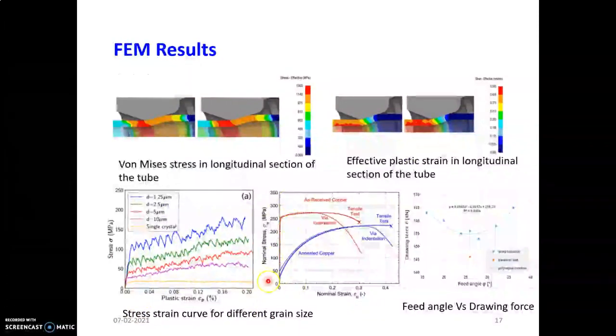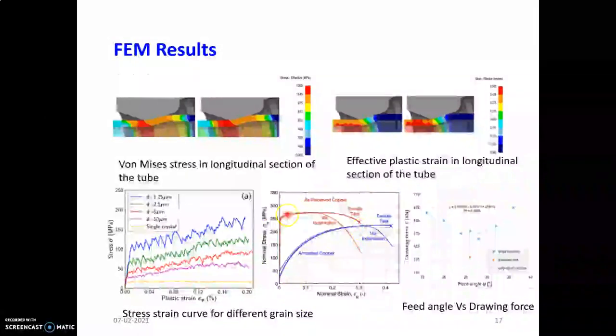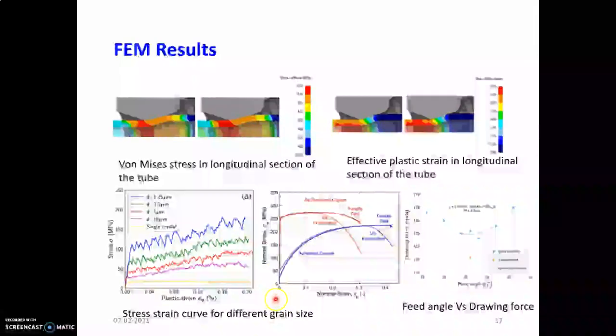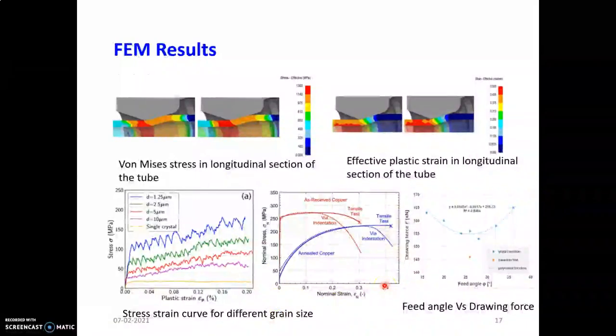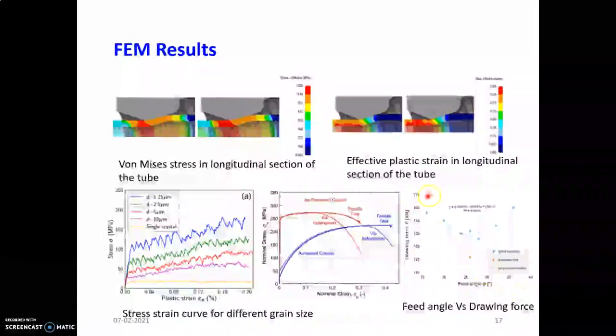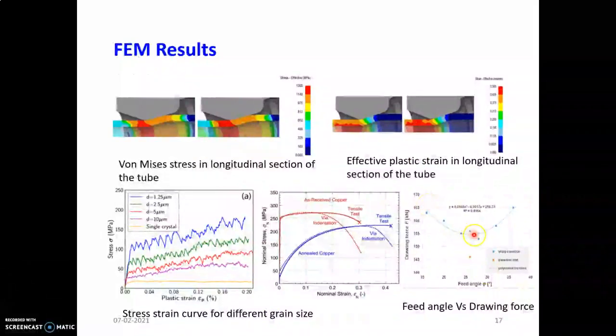Nominal stress versus nominal strain - the annealed copper is here and the ATB copper is here. You can see ATB copper tensile stress is more while the annealed copper strength is less, and this goes on increasing with nominal strain. This is the graph of drawing force versus feed angle. As feed angle increases, force goes on decreasing, but at a certain point it becomes optimum, then after that point it goes on increasing again.